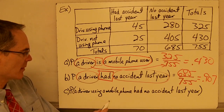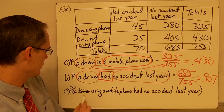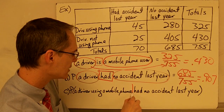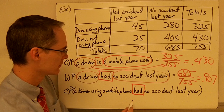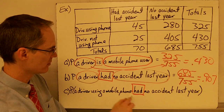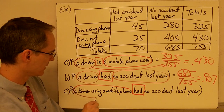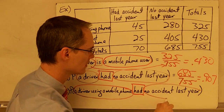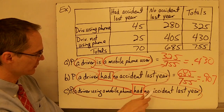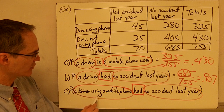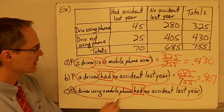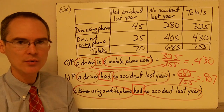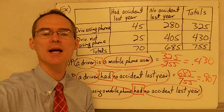For the last one — the probability that a driver using a mobile phone had no accident last year — this one is slightly different because I'm not looking at all drivers; I'm only looking at drivers who use a mobile phone. Try this one on your own and we'll look at the answer in class.